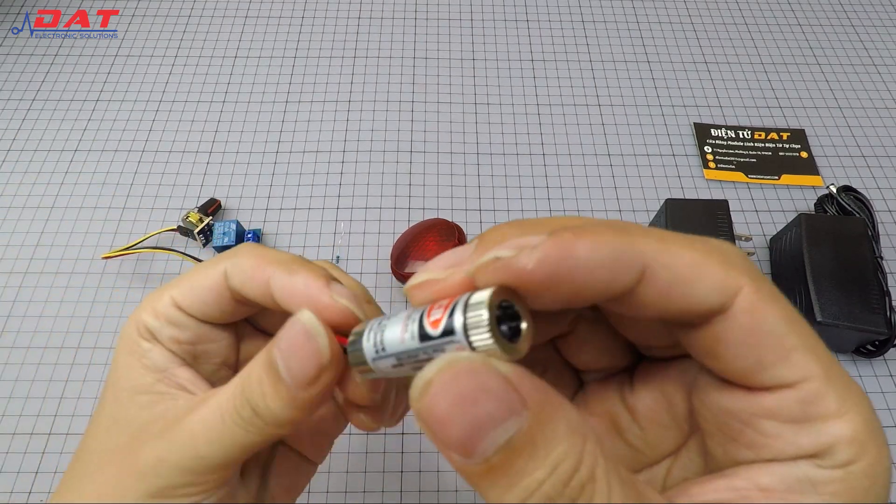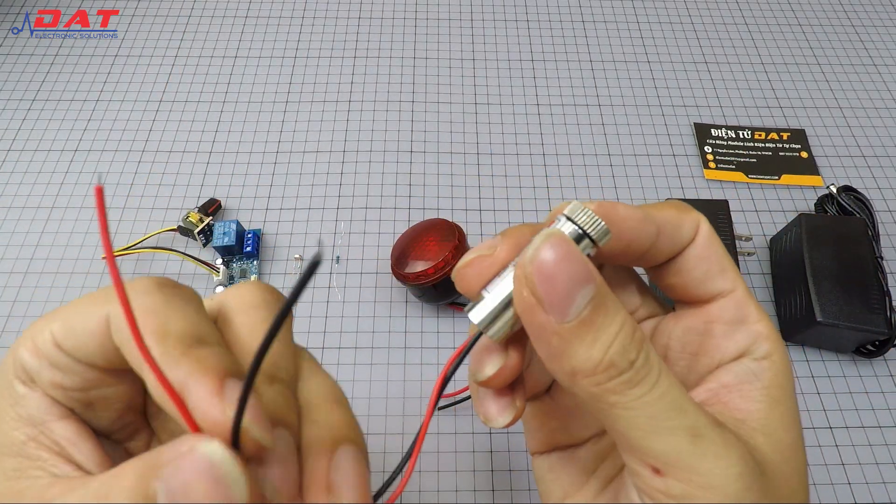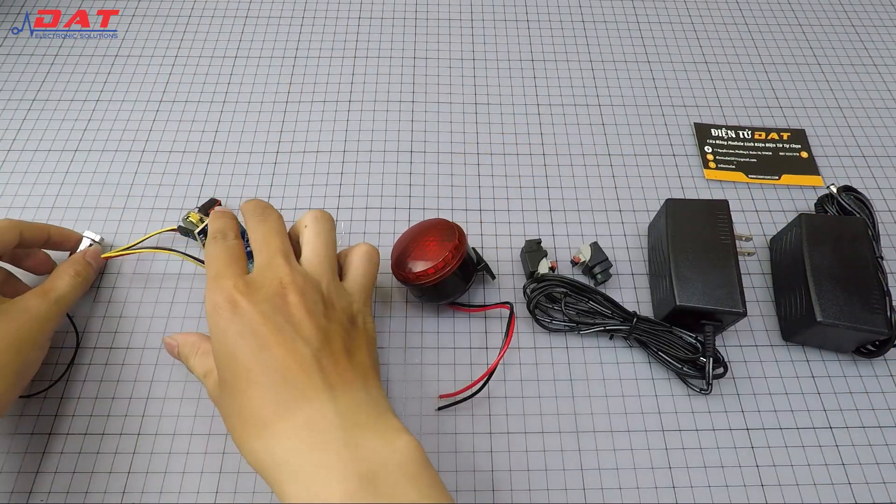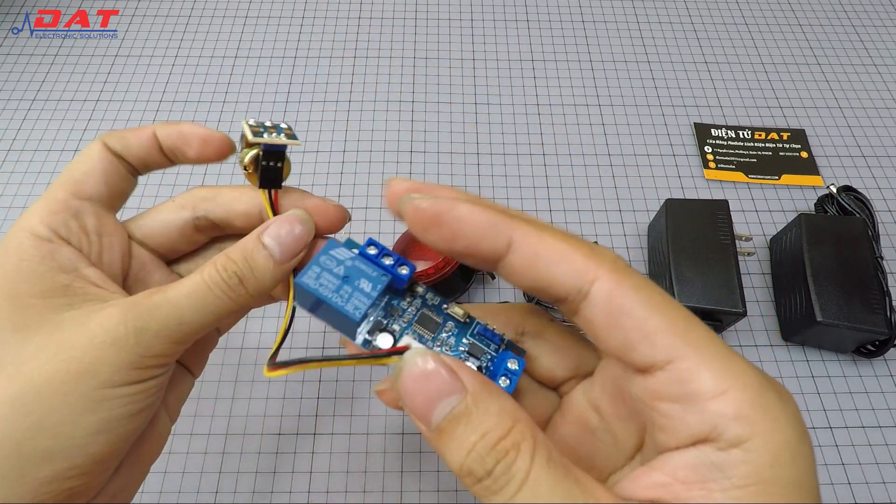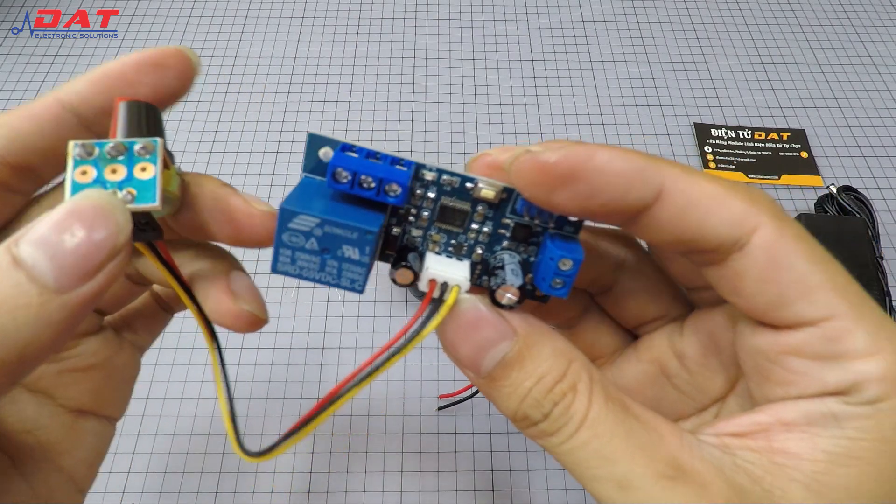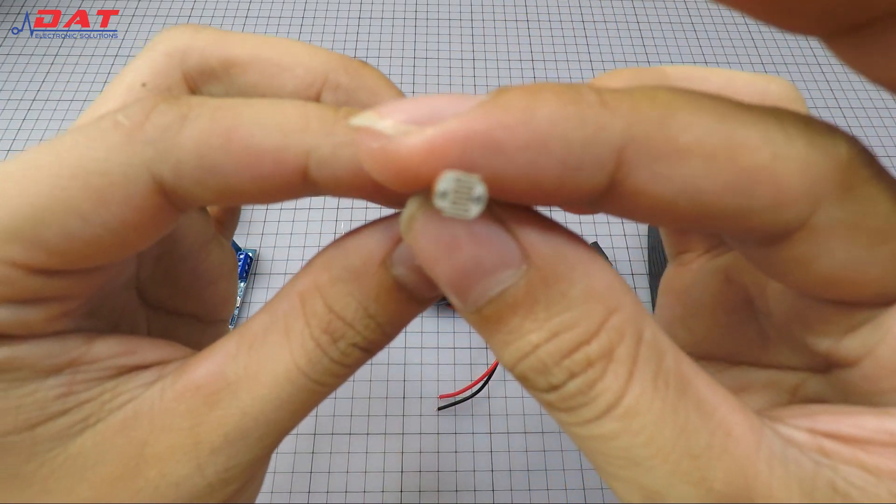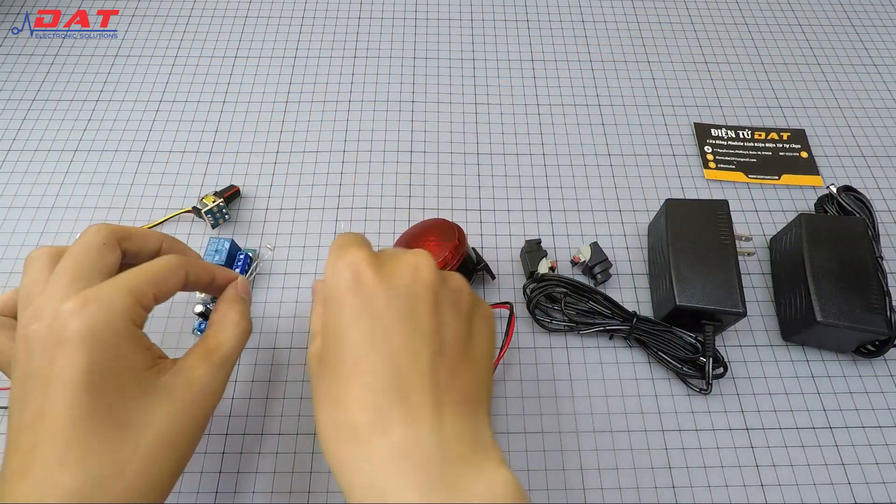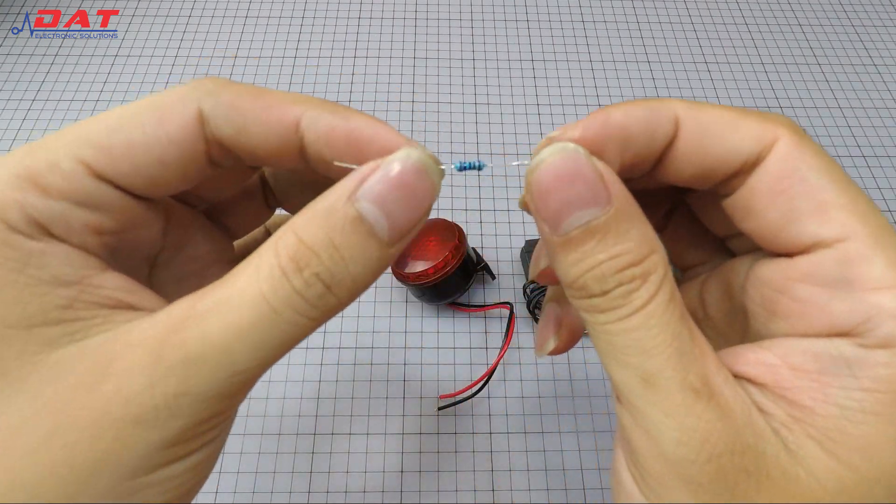First is a red dot laser, 5V laser. A VKT-102 delay circuit with 7 modes. One photoresistor. One 220 ohm resistor.